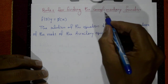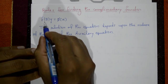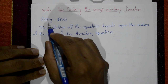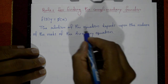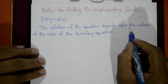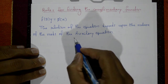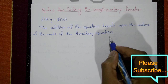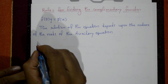For finding the complementary function, the equation is f(D)·y = φ(x). The solution of the equation depends upon the nature of the roots of the auxiliary equation. Now there are four types of the complementary function.